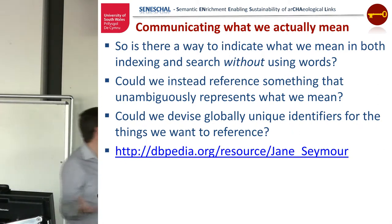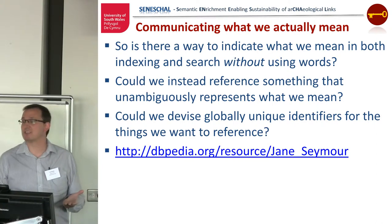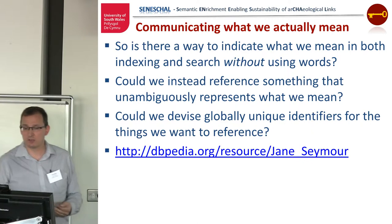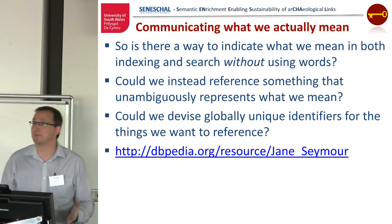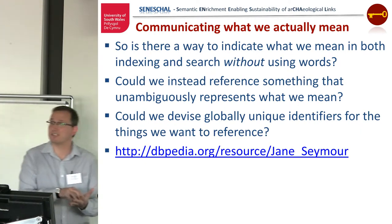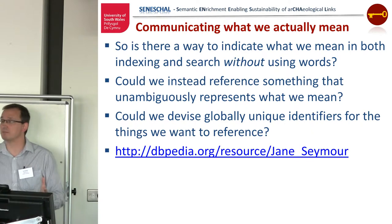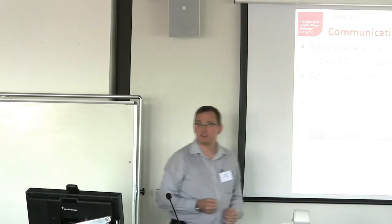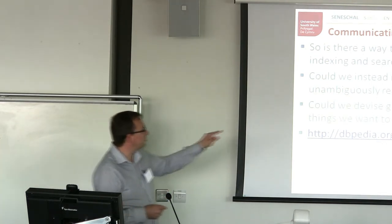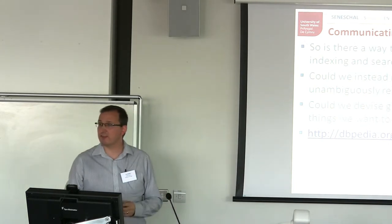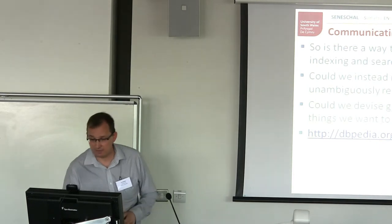What we want to be able to do in both search and indexing is to say what we really mean, not just use words to describe things because they're inadequate. Could we reference something that unambiguously represents what we mean, rather than trying to use a word? Could we devise some globally unique identifier for the things we want to reference? Yes, we can — we've already got that mechanism. It already exists: it's the web. We can piggyback that architecture and reuse it for data, not just pages. There's an example of a resource that describes Jane Seymour — it's globally unique, globally referenceable, available 24/7, and if we refer to it, we know we're referring to the wife of Henry VIII and not Dr. Quinn Medicine Woman.